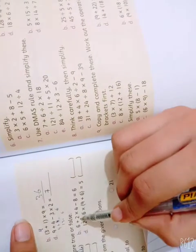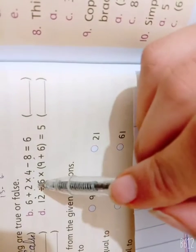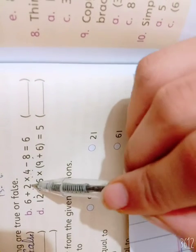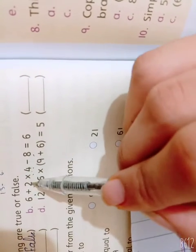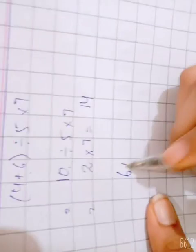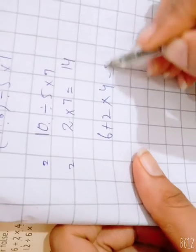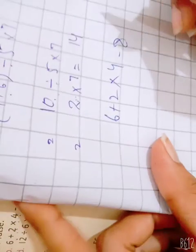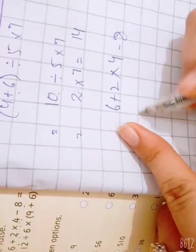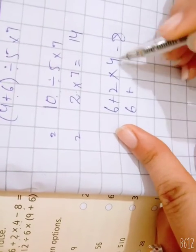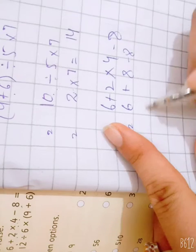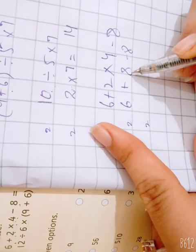Next question: 6 plus 2 multiplied by 4 minus 8. We will multiply 2 by 4, which is 8. So we will solve this: 6 plus 8 minus 8. First we will multiply, then we will add 6.